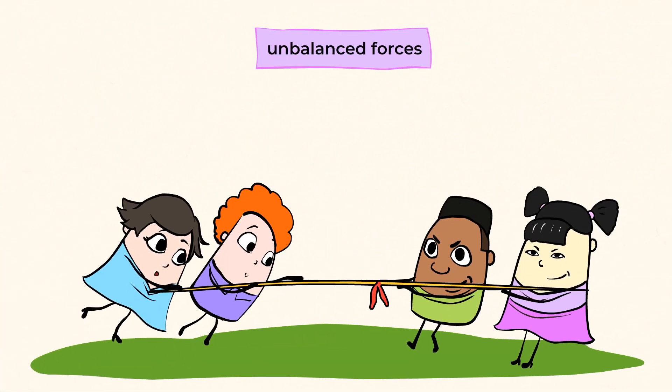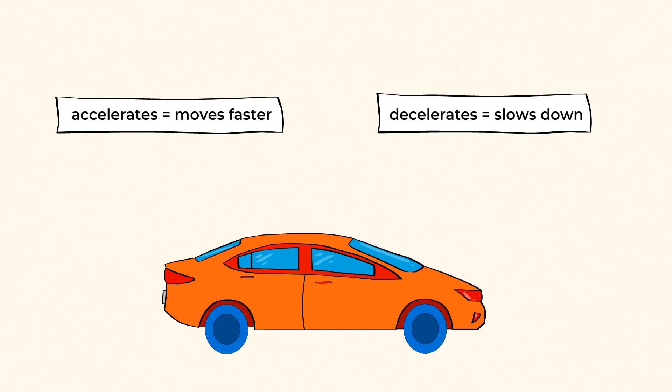When the forces acting on an object are unbalanced, the object's motion changes. It may speed up or slow down, and it may also change its direction.